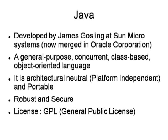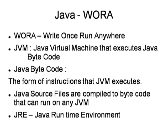Java is an object-oriented programming language which is developed by James Gosling at Sun Microsystems. Recently it is merged in Oracle Corporation. It is a general purpose, concurrent, class-based, object-oriented language. The basic goal behind the creation of Java is to make it architectural neutral — that means the most popular word: platform independent and portable. It is robust and secure, and the license is GPL — General Public License — that means anyone can use it, develop it, and also contribute to it.